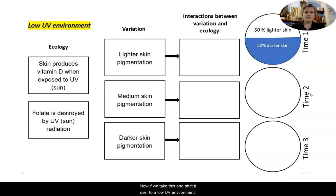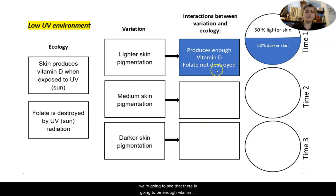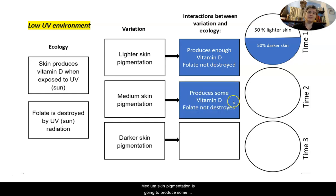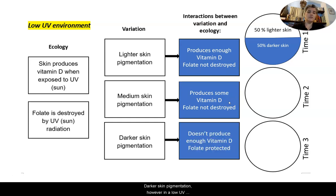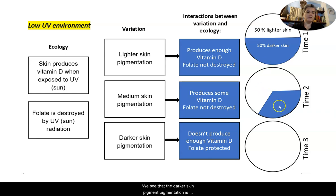Shifting to a low UV environment, the ecology and variation remain the same: skin production of vitamin D and folate destruction by UV radiation, with lighter, medium, and darker pigmentation variants. In a low UV environment, lighter skin produces enough vitamin D and folate is not destroyed. Medium skin produces some vitamin D and folate is not destroyed. Darker skin, however, does not produce enough vitamin D in a low UV environment, though folate is still protected. Starting again at 50-50, darker skin pigmentation decreases over time because folate is protected but not enough vitamin D is produced.